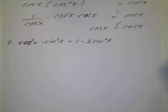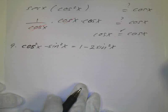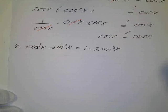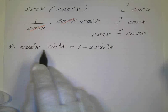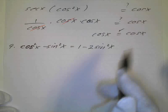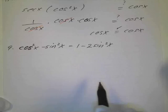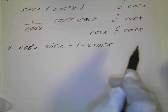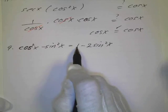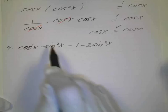This is number 9 from section 5.1. Basically this is the left side of our identity and our right side. Now there's a couple ways to approach this. What I've been doing is emphasizing the fact that sine squared plus cosine squared equals 1. So we could work on the right side and substitute sine squared of x plus cosine squared of x to make the right side look like the left side.